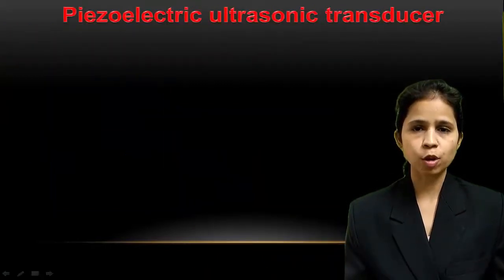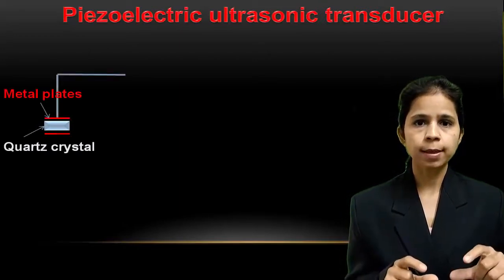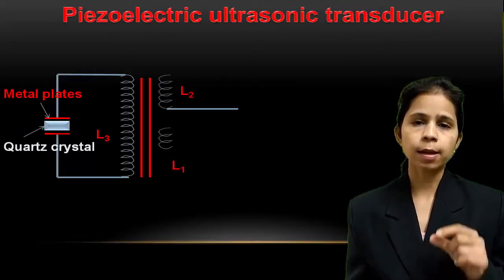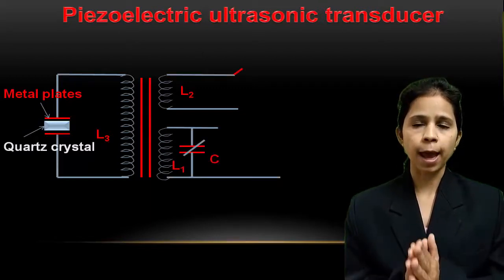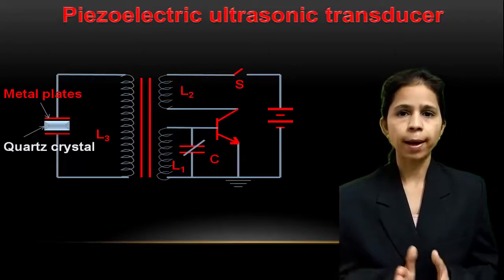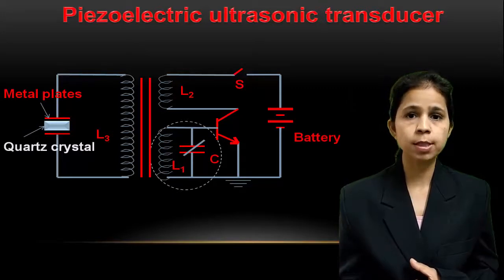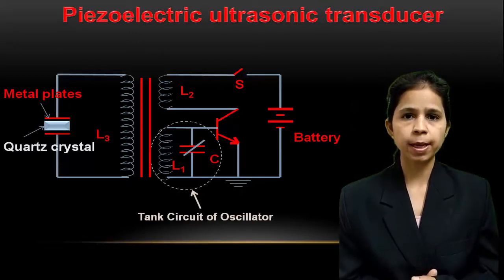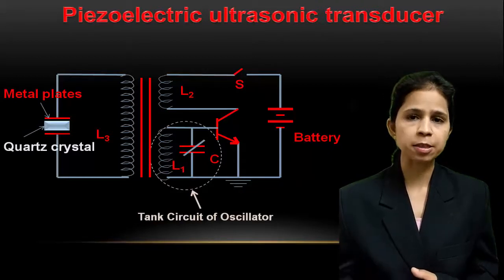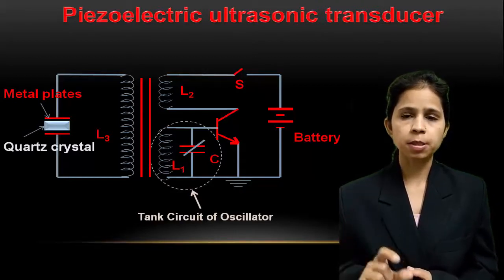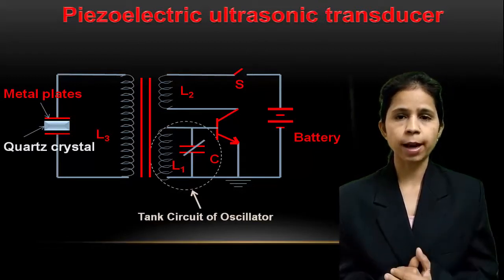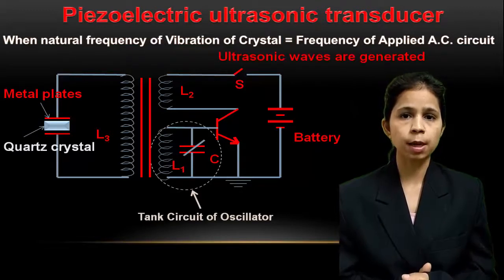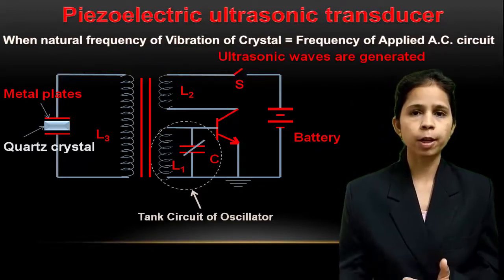A piezoelectric ultrasonic transducer consists of a piezoelectric crystal kept between two metal plates, connected to a primary coil L3 of a transformer, which is inductively coupled to an oscillator circuit. The secondary L1 of the transformer and capacitor C1 form the tank circuit (tuned circuit) of the oscillator. When the battery is switched on, the oscillator produces high-frequency AC voltages, which are fed to the metal plates surrounding the crystal through transformer action. The inverse piezoelectric effect takes place and the crystal is set into mechanical vibration at its natural frequency. The capacitor C1 is adjusted so that the frequency of the applied voltage equals the natural frequency of vibration of the crystal, resonance takes place, and ultrasonic waves of high frequency are generated.